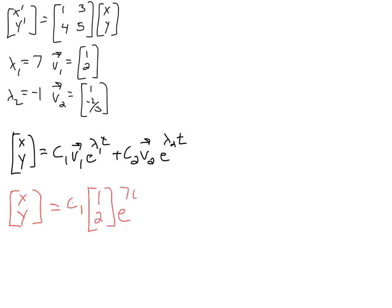where the eigenvalue is 7. Then we add the second arbitrary constant c₂ times the other eigenvector [1, -2/3], and that's all e to the -t.